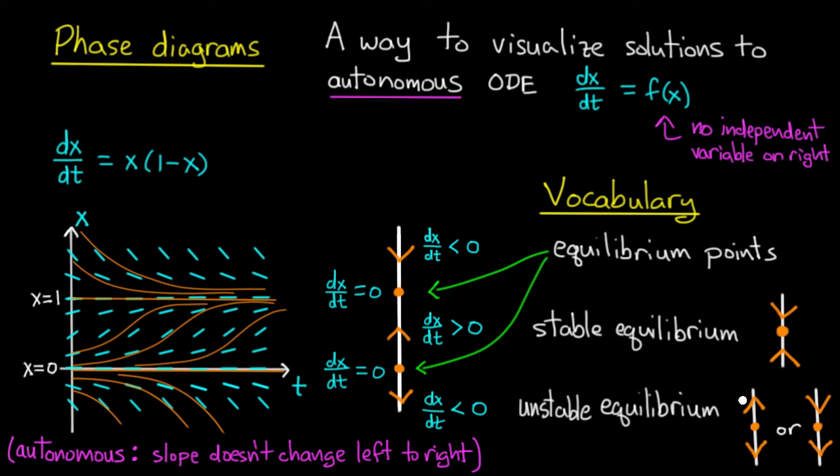In other words, can I glue together a whole bunch of these guys in some line which could not possibly be the phase line for a differential equation? Or is it true that any picture I draw, I can come up with an example of a differential equation which has that picture as its phase line?